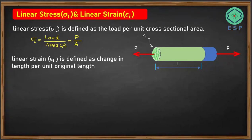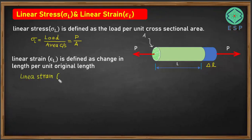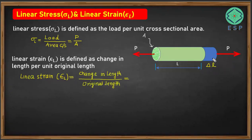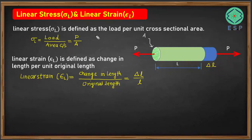Similarly, we can define the linear strain. Linear strain, epsilon L, is defined as change in length per unit original length. The change in length is delta L and the original length is L. So the linear strain epsilon L equals delta L divided by L.